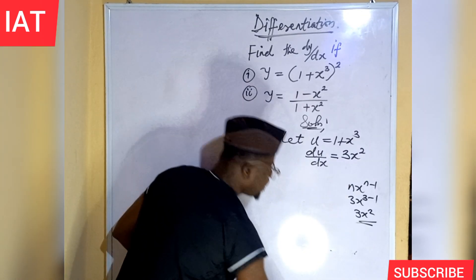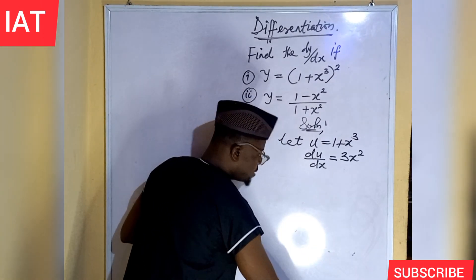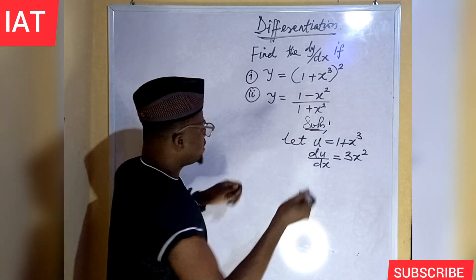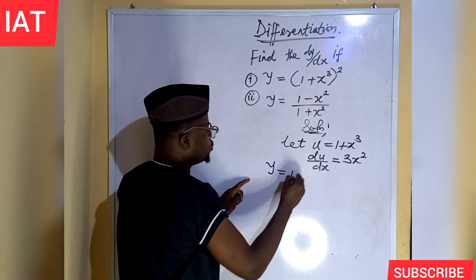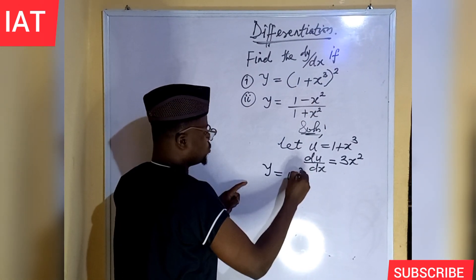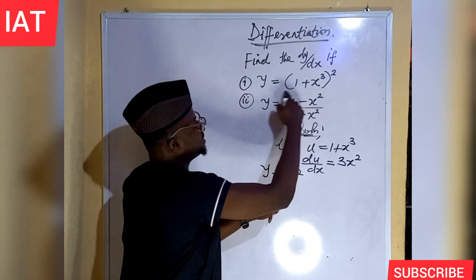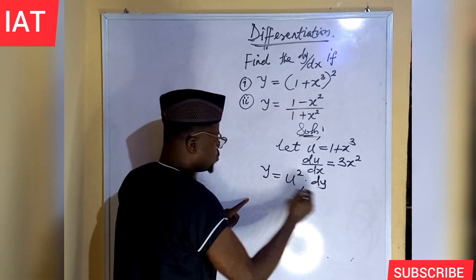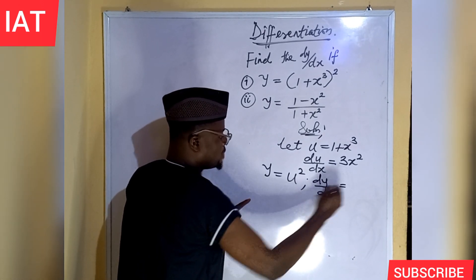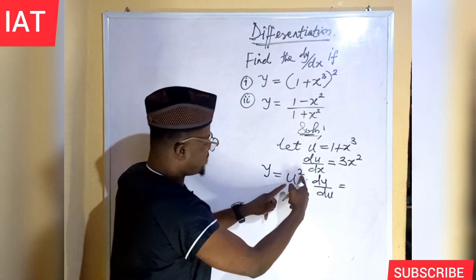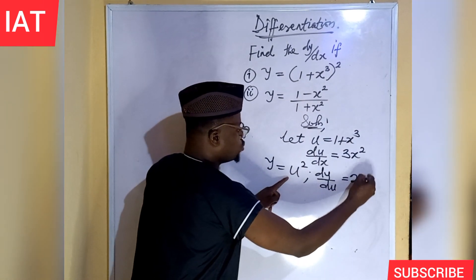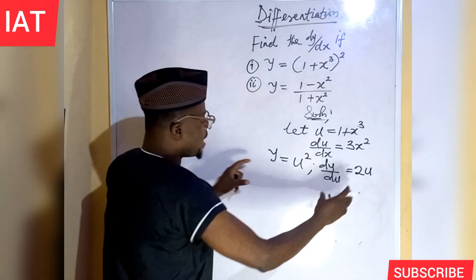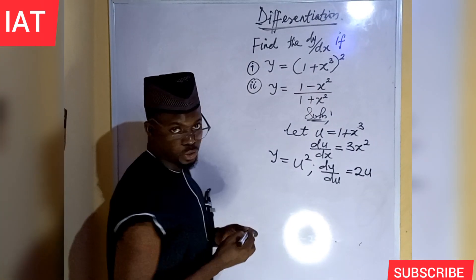Again, since we made an assumption that u should be represented by all we have in the bracket, it means the expression becomes y equal to u raised to the power of 2. Meanwhile, u is representing everything here. So this time, I'm going to differentiate this y with respect to u. And if I do that, what I will be having here is 2u raised to the power of 1, which is the same thing as 2u. Now, I have successfully differentiated all this function.